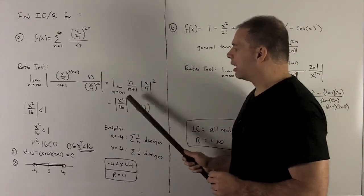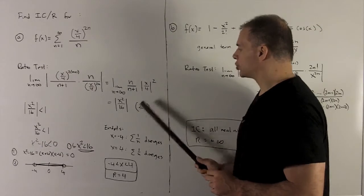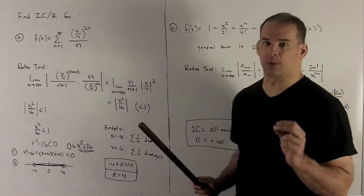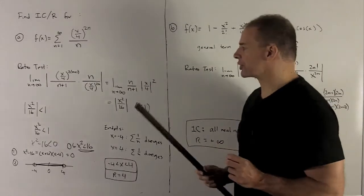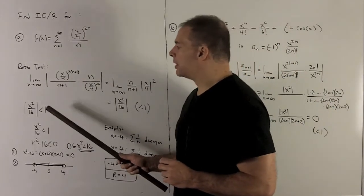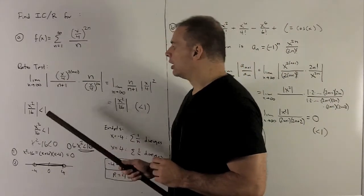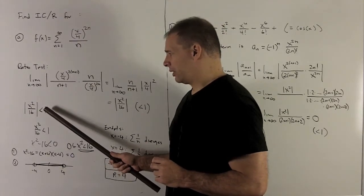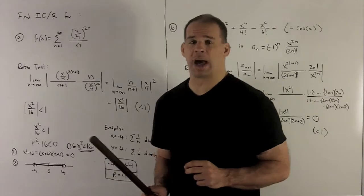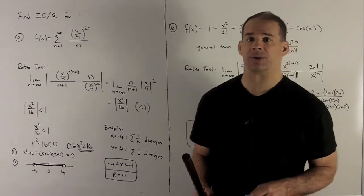So we want to check where this term here is strictly less than 1. That's what the ratio test says. When that's strictly less than 1, the original series converges. So we have this thing here. Now note, the regular way we would decode would be to take the 1, put it on the other side as a minus 1, and then you could drop the absolute value signs.